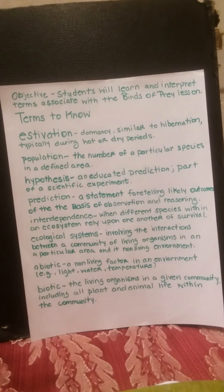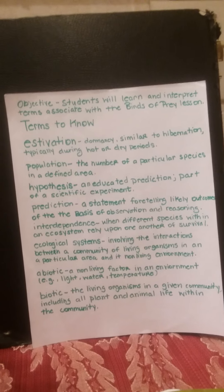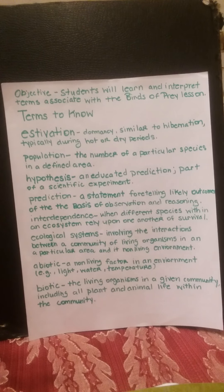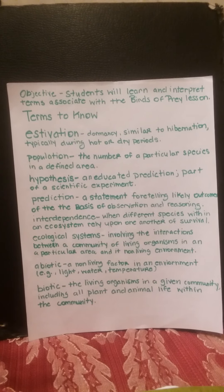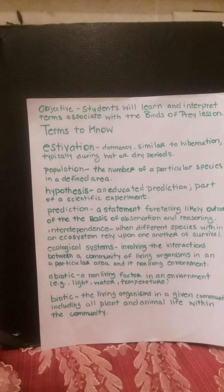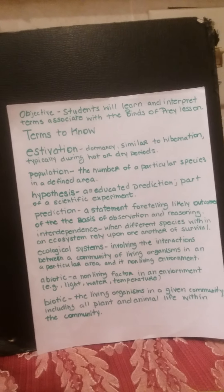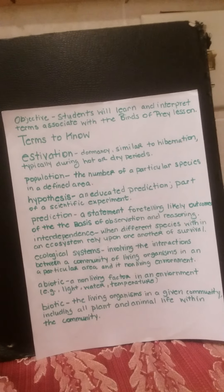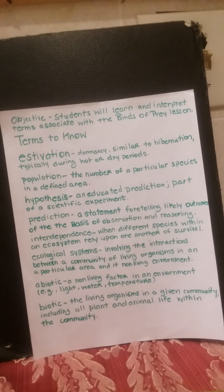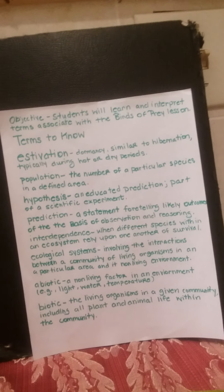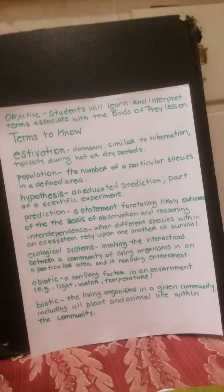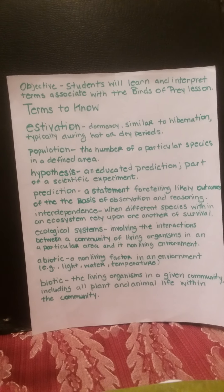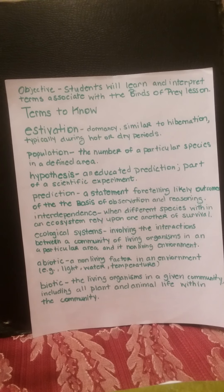I went over the background information in the first part of the video and introduced the terms. Now I'm going to go into detail with the terms. Estivation means dormancy, similar to hibernation, typically during hot or dry periods. In the birds of prey lesson, we learned that the Piute ground squirrels go into estivation when temperatures get too hot during the summer season — they go down into the ground and do their summer sleep.